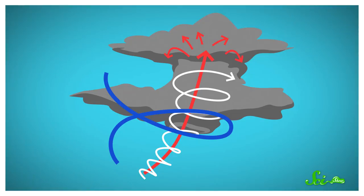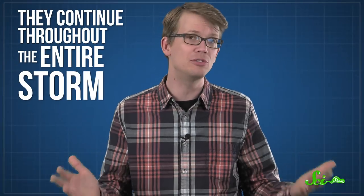Eventually, they form the sideways whirlwinds that we imagine when we think of a tornado. But those vertical winds don't stop once the tornado gets spinning. They continue throughout the entire storm.